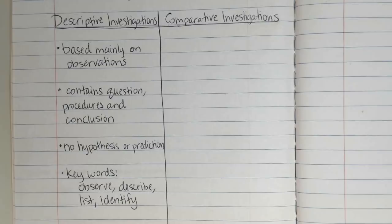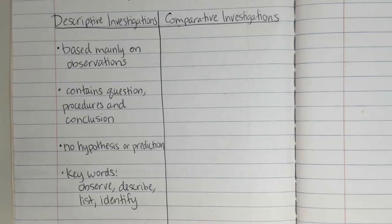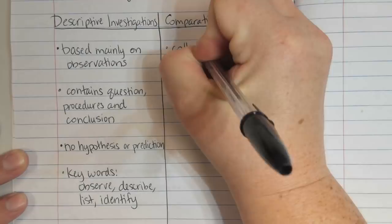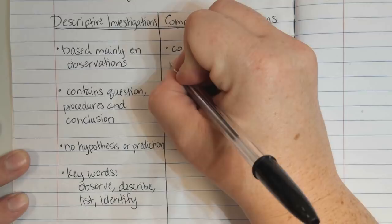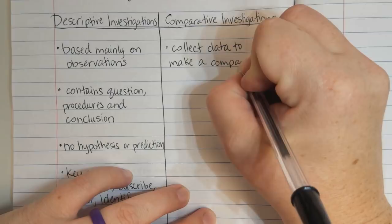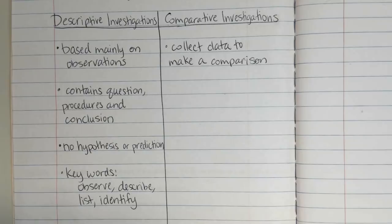Moving on to comparative investigations — the word 'comparative' is very similar to the word 'compare,' which is the same root word. This is usually an investigation where we are comparing two things: maybe two different organisms, two different features, or collecting data under two different conditions in order to compare them. For example, if you are going to look at two different insects and compare their external anatomy — what features do they have on the outside — that would be a comparative investigation. So this is where we collect data to make a comparison.